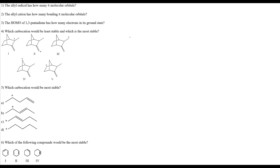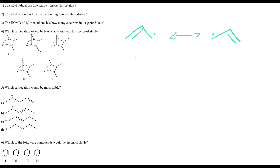An allyl radical has one unpaired electron. To work with these problems, I like to draw the resonance structure. The resonance structure can look like this — the radical on the right side, or the radical on the left side — and they're the same thing, like flipping a plastic model.